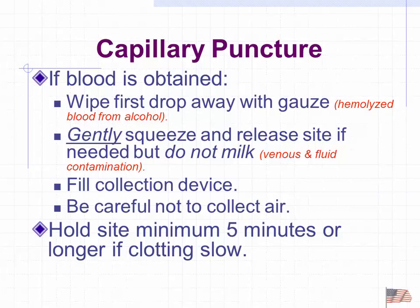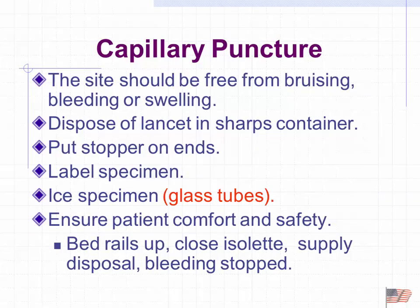Fill the collection device and be careful not to collect air. Keep the device level while collecting blood — if you tip it downward, air will get in and you'll have an air bubble to deal with. Once you have your sample, apply pressure to the puncture site until it clots. A capillary site clots much quicker than an arterial puncture site given the smaller puncture.